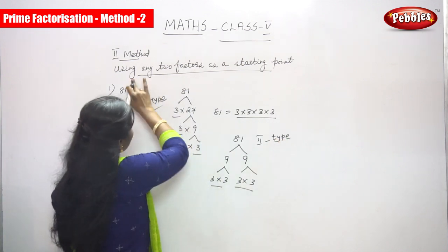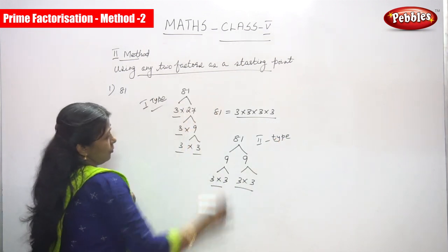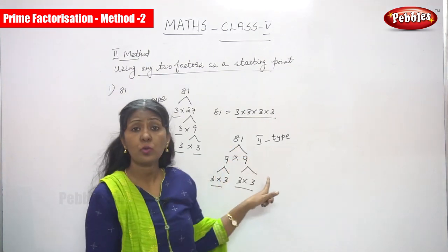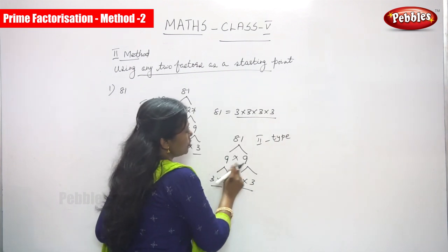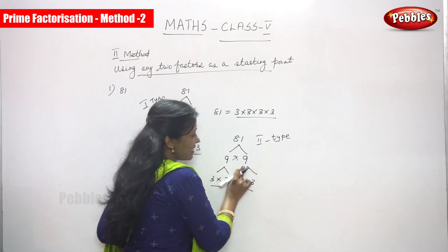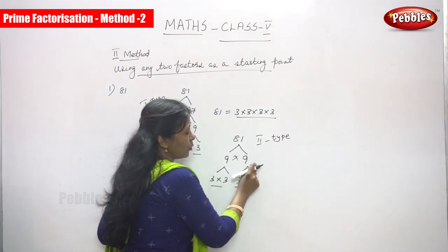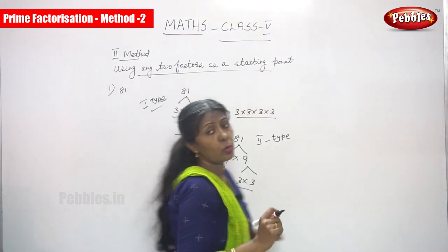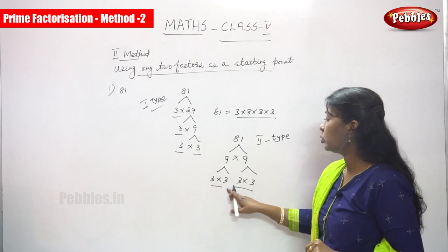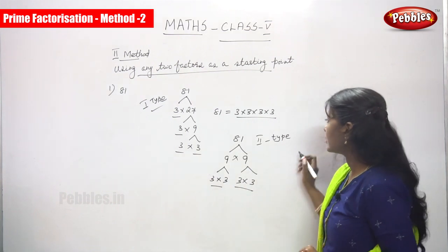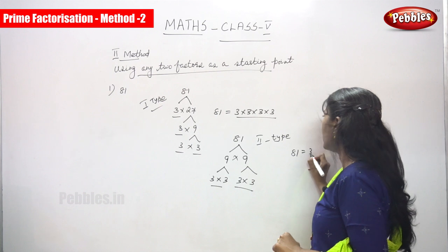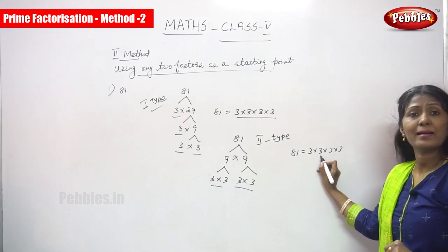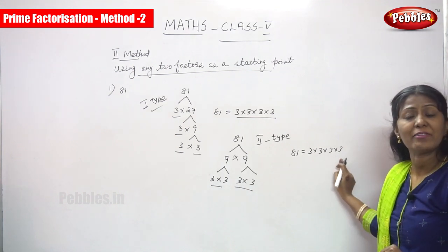This is the second type but the same method is using any two factors. So here also two factors, that is 81, 9 into 9. So after 9 into 9, what you're going to do? You have to consider this 9 as a factor, you have to find out the factor of 9. So 3 into 3, for this 9 also you have to find out the factor that is 3 into 3. So what are the numbers you will get? 3 into 3 into 3 into 3. So all together the same 81, the number is 3 into 3 into 3. So 3 threes are 9, 9 threes are 27, 27 into 3 is 81. This is the answer.